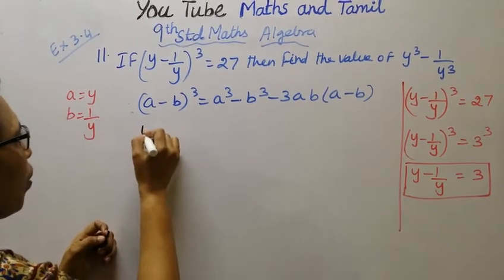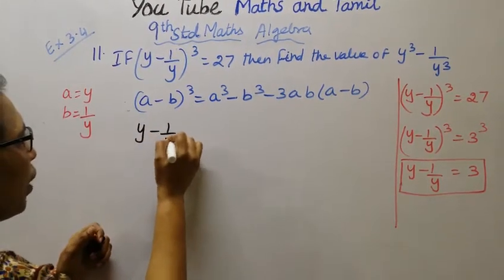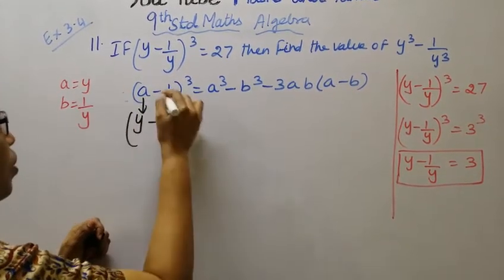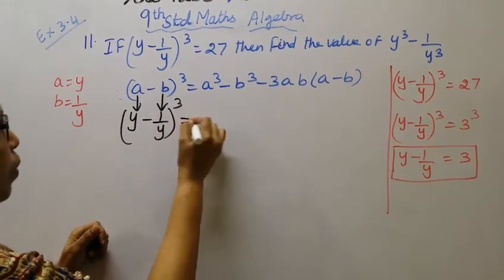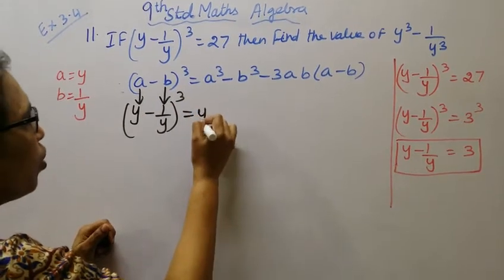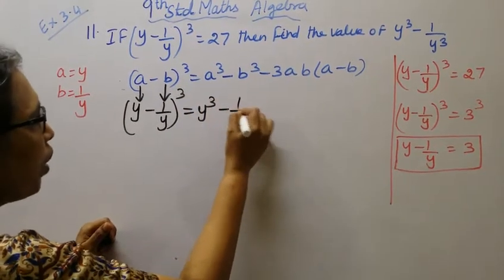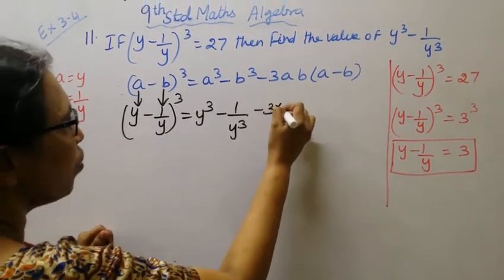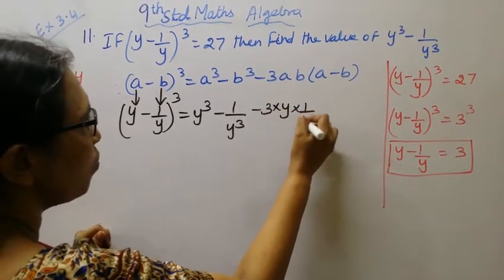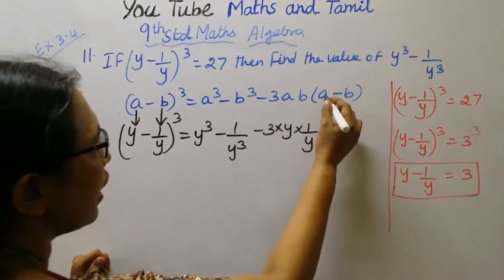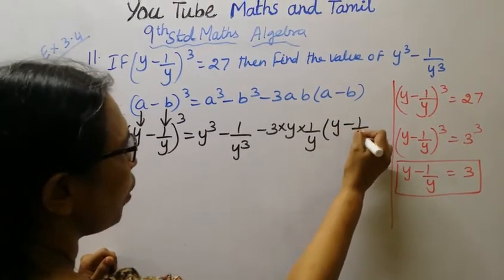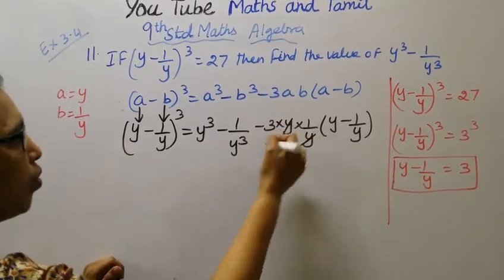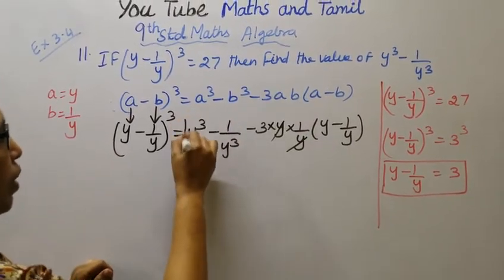Now we take y minus 1 by y the whole cube. A is y, b is 1 by y. Then we get y cube minus 1 by y cube minus 3. A is y, b is 1 by y. Here, the y cancels out.